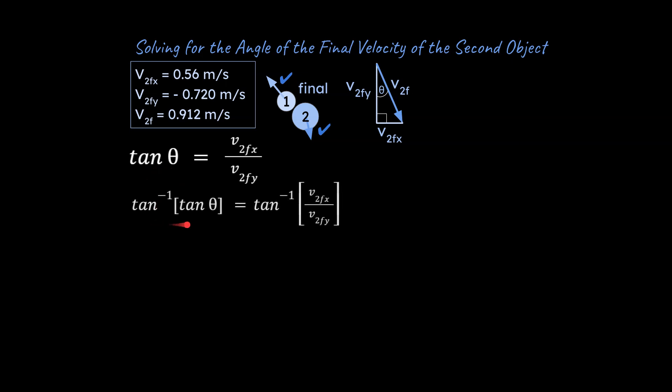So we don't want the tangent of theta though, we want theta itself. So to get rid of this tangent function we take the arc tangent of both sides. That will cancel out this tangent function and we're left with theta is equal to this value here at 37.9 degrees for this angle right here.